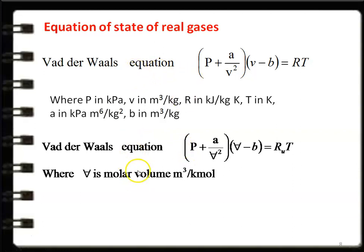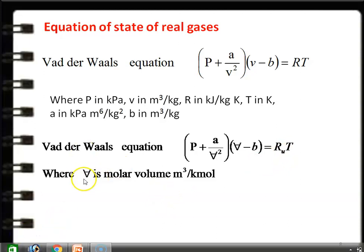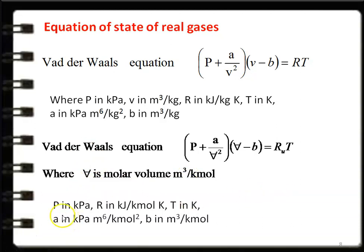The Van der Waals equation is also expressed in terms of molar volume V̄: (P + a/V̄²)(V̄ − b) = R̄T, where V̄ is molar volume in m³/kg·mol, R̄ is in kJ/kg·mol·K, a is in kPa·m⁶/kg·mol², and b is in m³/kg·mol. Both forms are equal and identical; the appropriate one is chosen based on the available data.